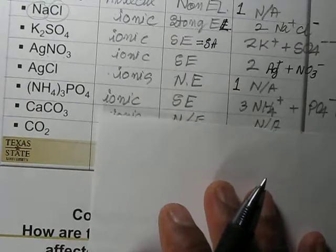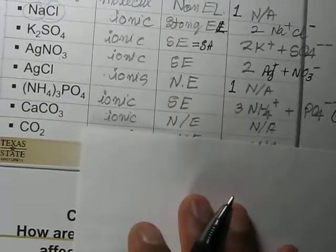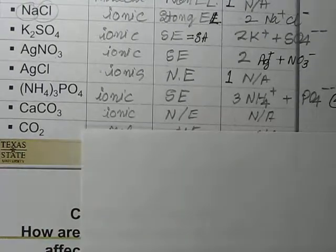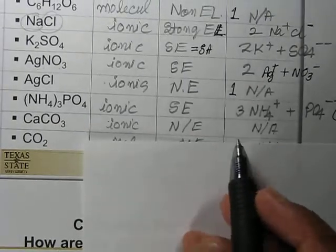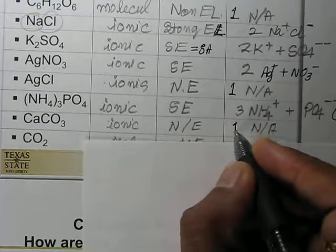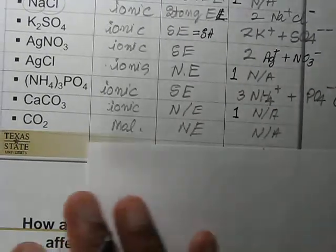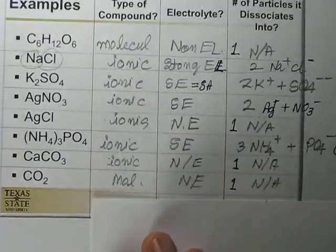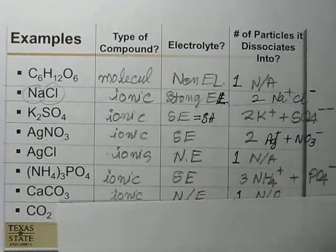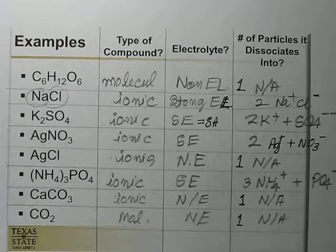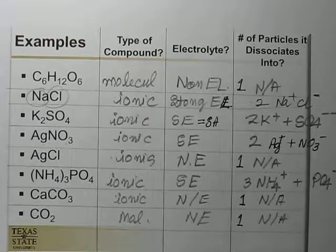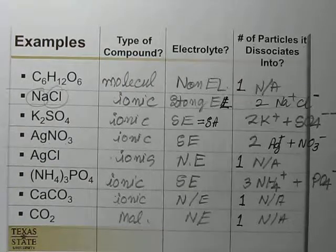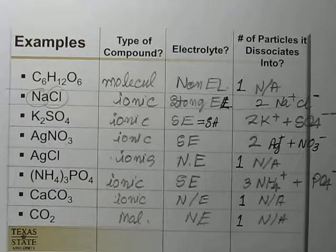Calcium carbonate (CaCO3) — all carbonates are generally insoluble, and calcium carbonate is like chalk — so it is an ionic compound but a non-electrolyte; one molecule remains as one. Carbon dioxide (CO2) is a molecular compound, a non-electrolyte, does not dissociate, and one mole remains as one mole. This table helps classify compounds and determine how many ions they produce.